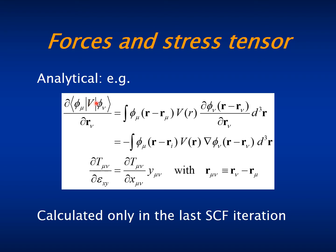For example, a matrix element of a potential V between two pairs of basis orbitals can be written in this way. And because the phi orbital is a function of R minus S_i, this can be rewritten as a matrix element between the basis orbital and the gradient of another basis orbital.